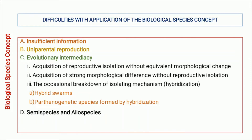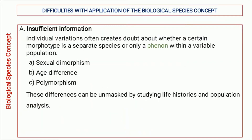The difficulties include insufficient information, uniparental reproduction, evolutionary intermediary, and the concept of semi-species and allo-species. First, insufficient information: the morphological variations within individuals of a single species create doubt whether these individuals belong to the same species or not, or whether these are just a morphotype. This is because of sexual dimorphism — the morphology of male and female of a single species can be very different from each other.